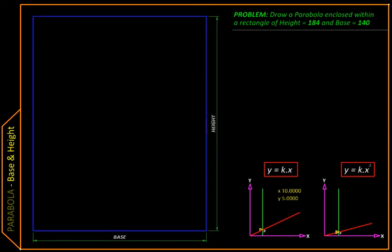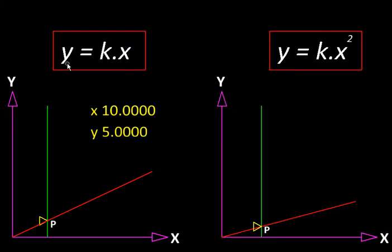For that, we will be using the difference between a straight line and a parabola. We know equation y equals kx represents a straight line through origin, and the equation y equals kx square would represent a parabola through origin.